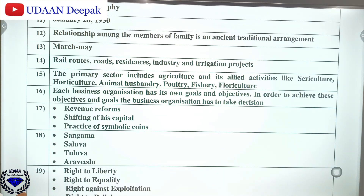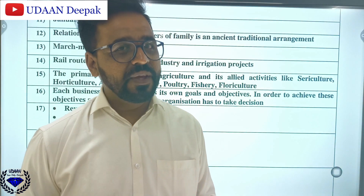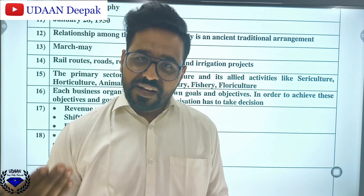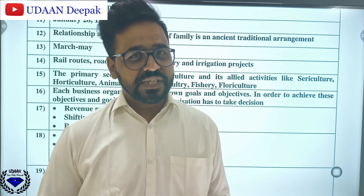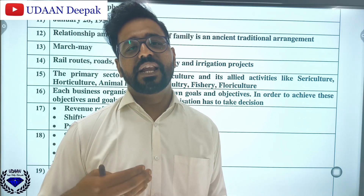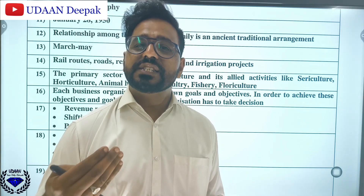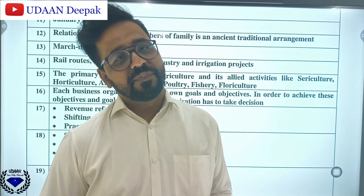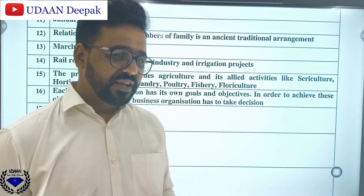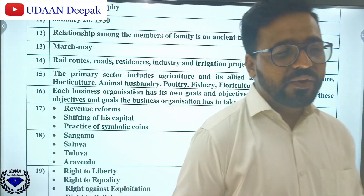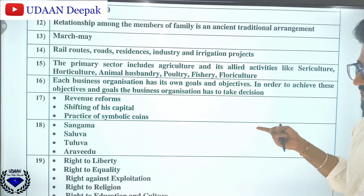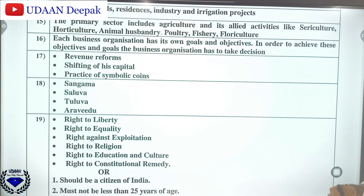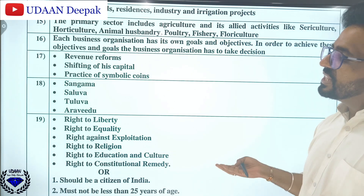If you are finding it helpful, kindly like, share and subscribe so that I can come up with more such topics and question papers related to upcoming examinations. The four dynasties that ruled the Vijayanagara Empire are: Sangamma, Salva, Kudva, and Aravindu dynasties.